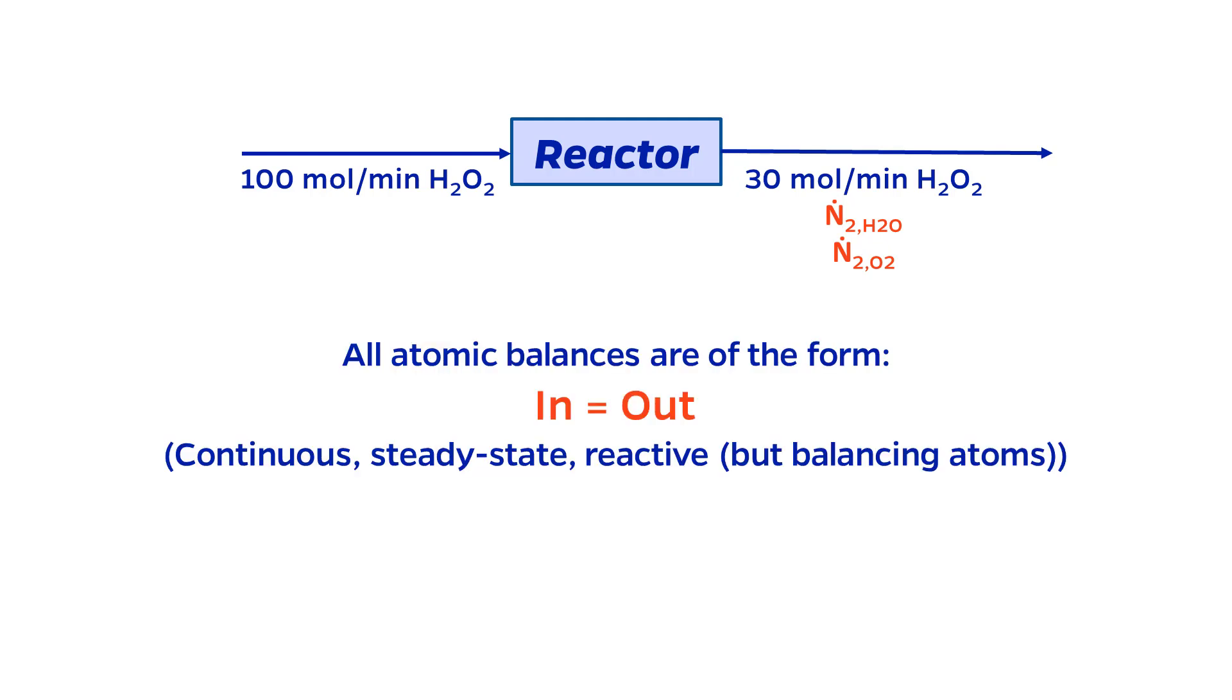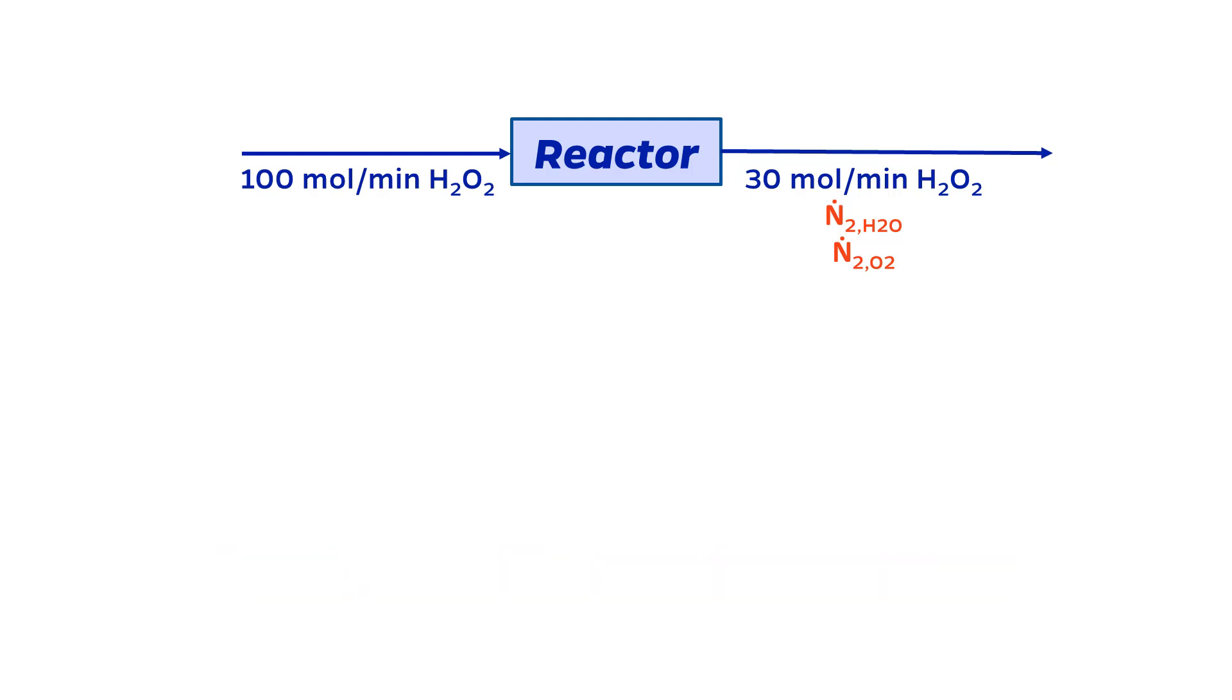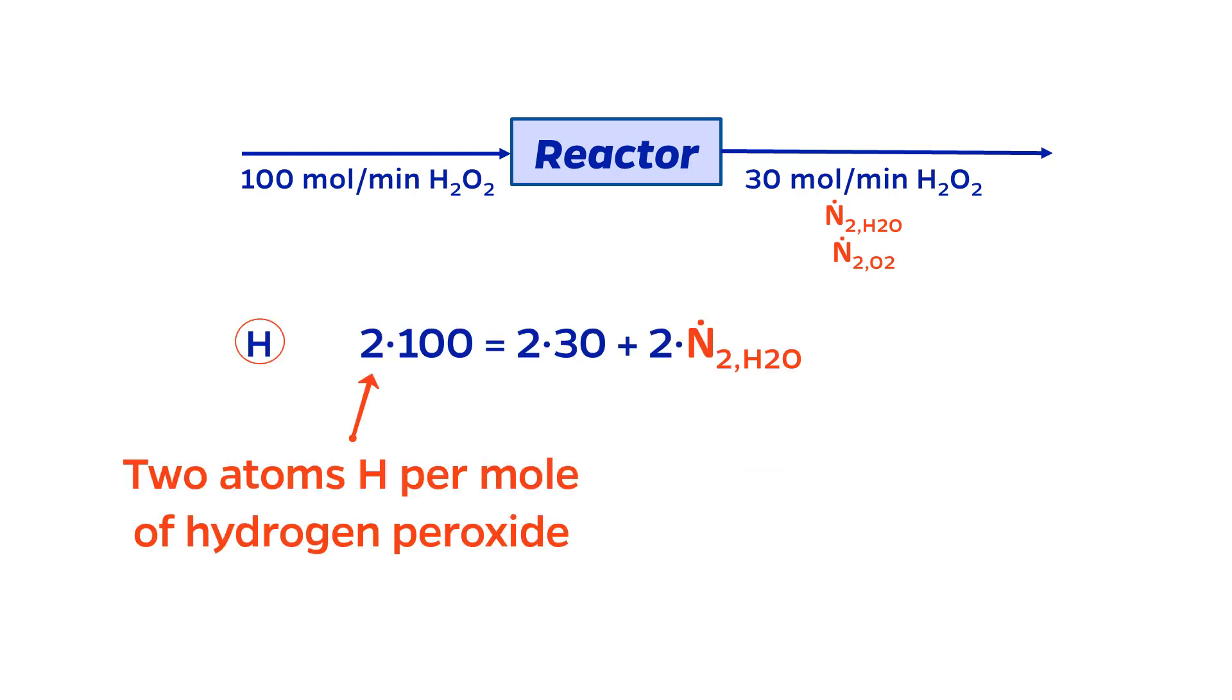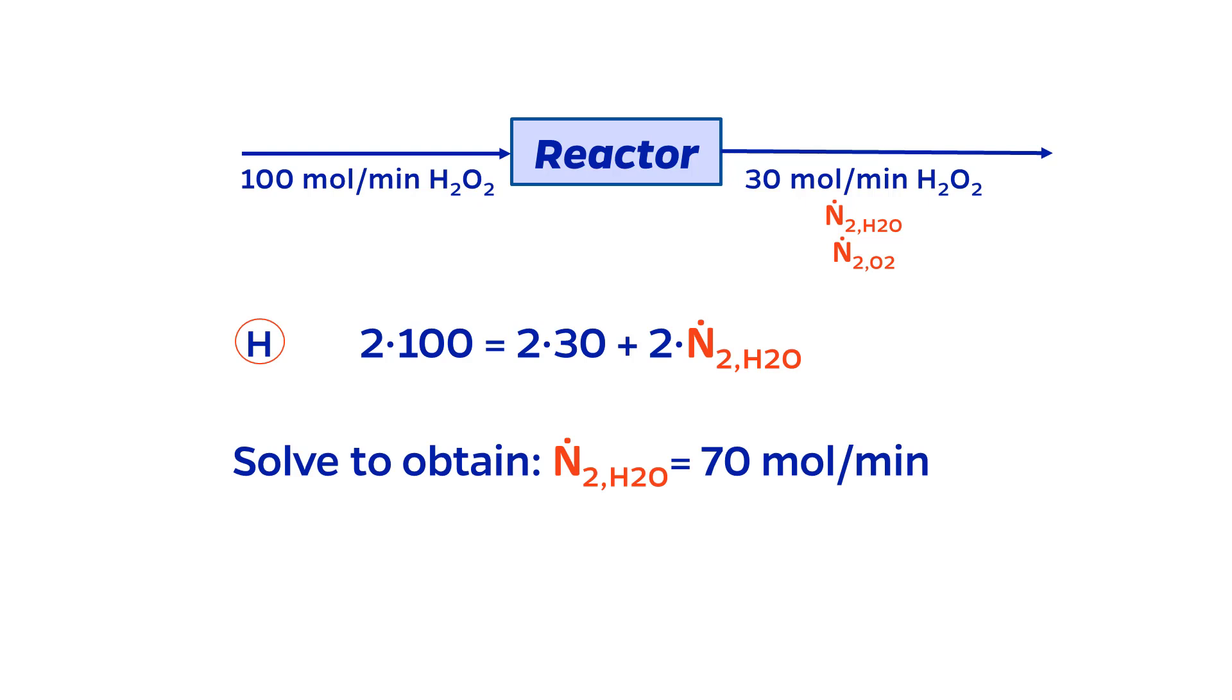As mentioned before, balances are simply in equals out, but I have to multiply the number of atoms in a given molecule by the molar flow rate of that molecule. Let's do the hydrogen balance first. There are two atoms of hydrogen per mole of H2O2. Therefore, 2 times 100 moles of hydrogen come into the reactor. The hydrogen coming out of the reactor is 2 moles of hydrogen per mole of H2O2 times 30, plus 2 moles of hydrogen per mole of H2O times the molar flow rate of water. This equation has only one unknown, which is the molar flow rate of water. If I solve it, I get 70 moles per minute.